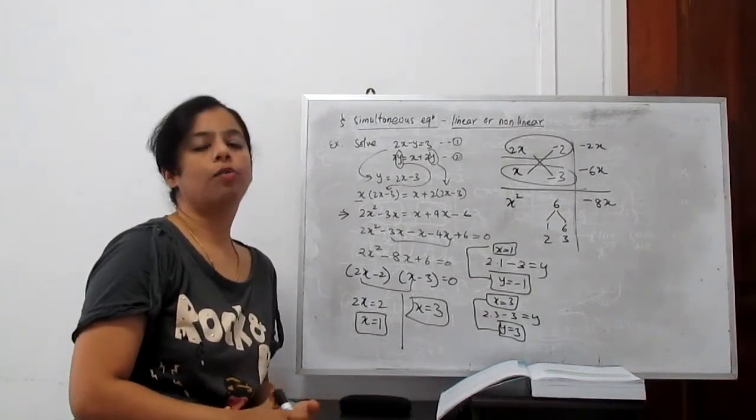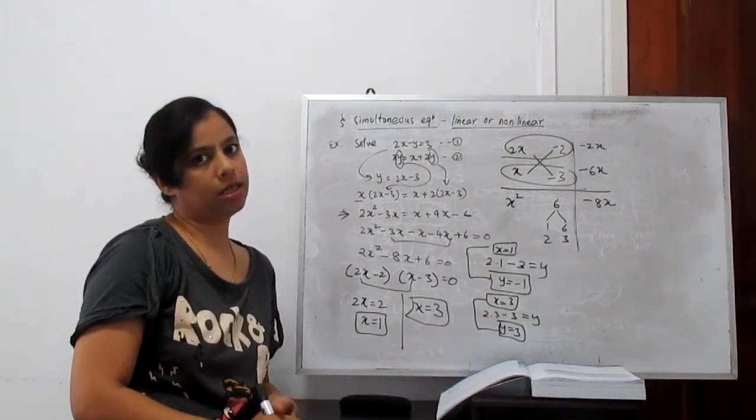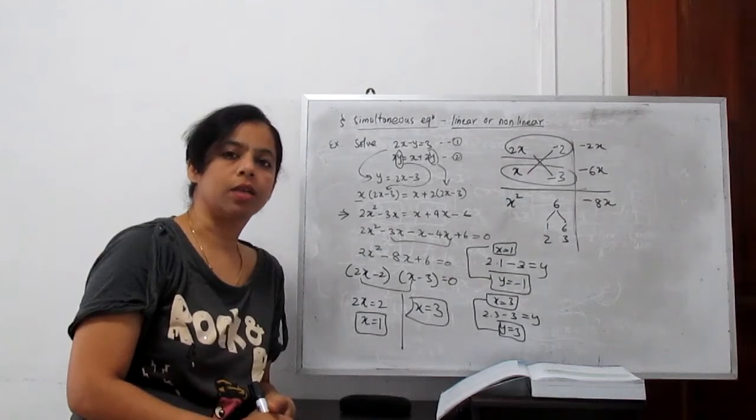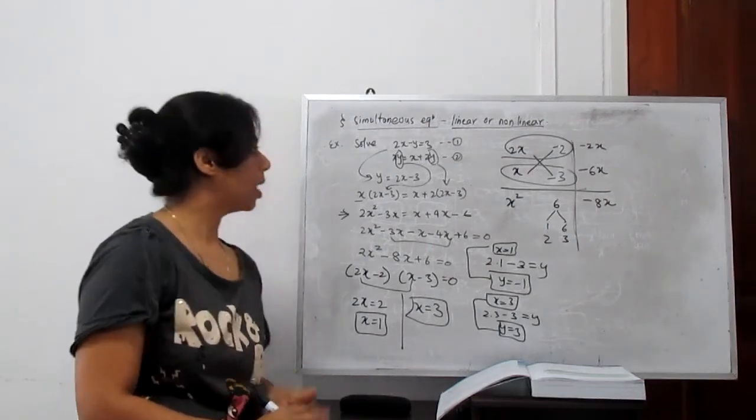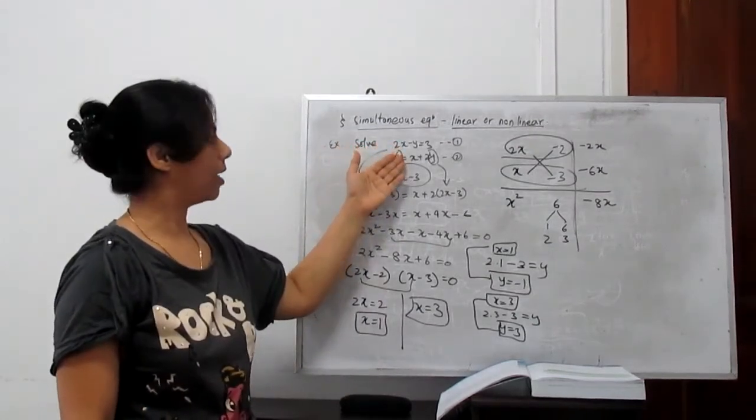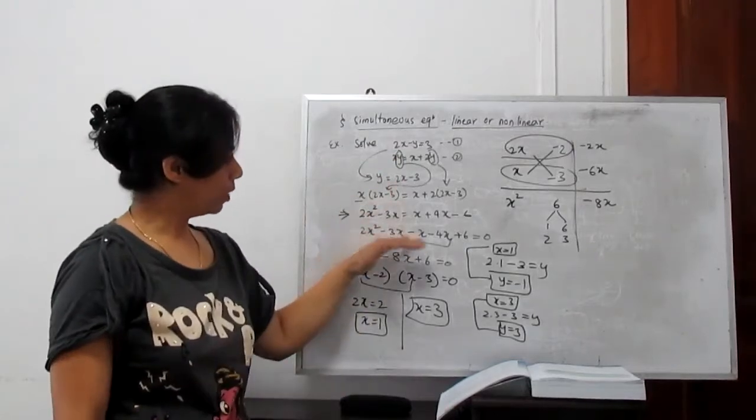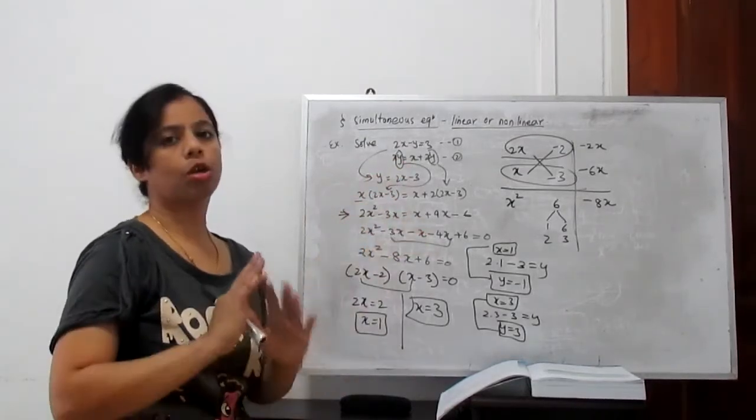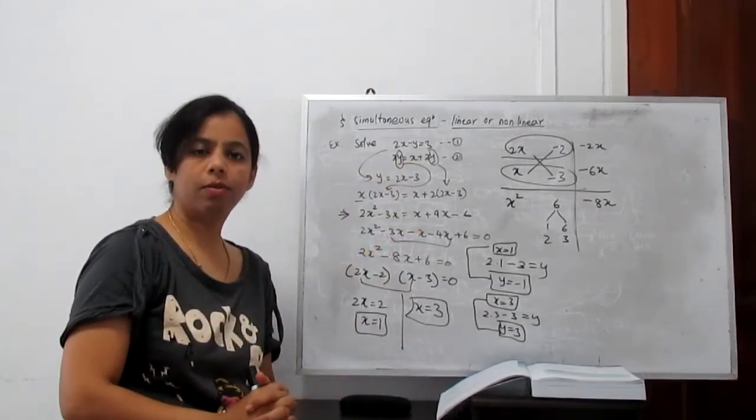So this is how we solve if one is linear and another is a quadratic equation. From the linear equation, you can find the value of x or y, either substitute in the second equation. Then in the second equation, only one variable quadratic it will become.